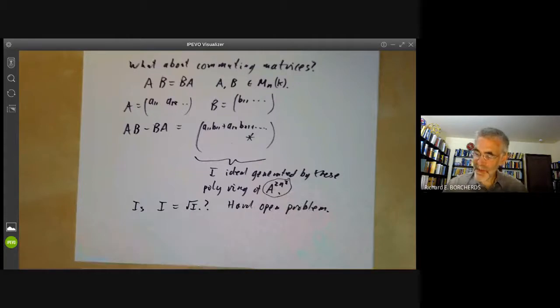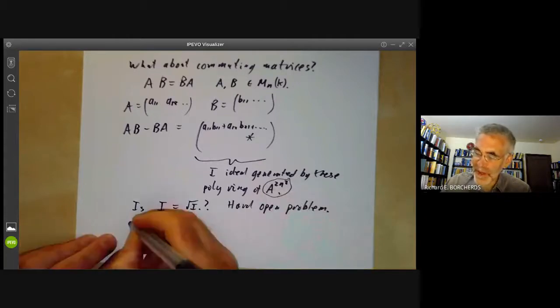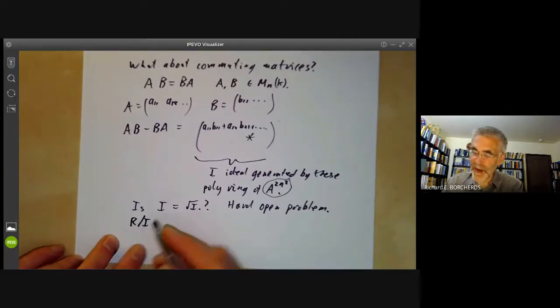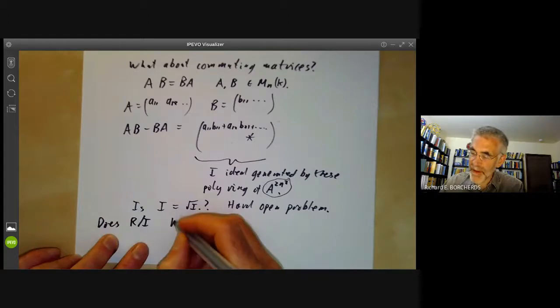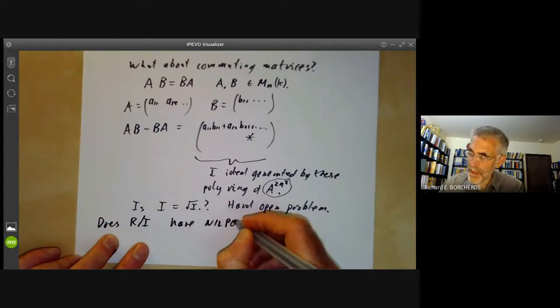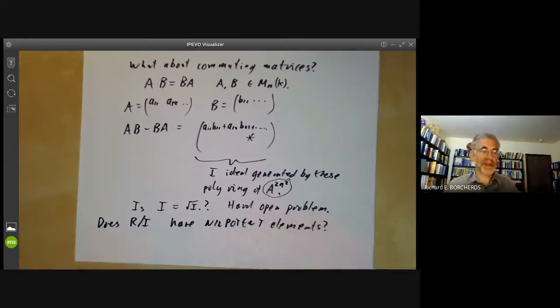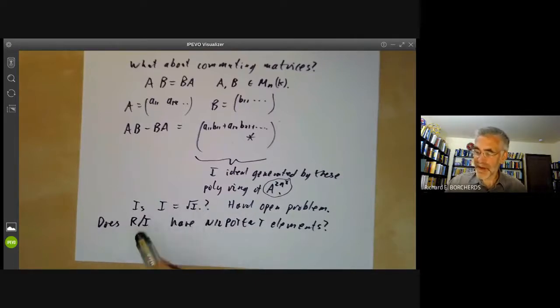what you're asking for is you're looking at the ring R over, if you've got an ideal i, and you want to know whether it's equal to its radical, you're asking whether the ring R/i has nilpotent elements. And I would have guessed that nilpotent elements in a ring are actually rather easy to find. They have this rather striking property that some power of them is zero, which ought to make them obvious. But even in a natural example like this, it's really, really difficult to see whether the corresponding ring R/i has nilpotent elements.